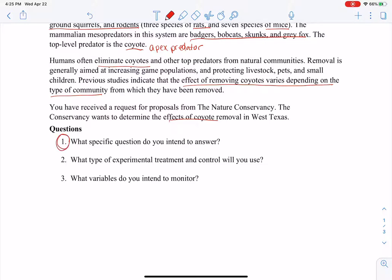What question do you want to answer? What is the experimental treatment? And that means what are you going to use to control the predators? How will you get rid of them? And what variables are you going to monitor? What will you look for to see if your idea is working?